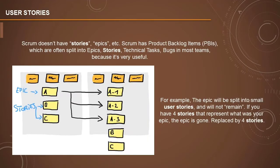The next work item type is user stories. We know about themes and epics; now we look at the next level of breaking down the system, which is user stories. Scrum generally doesn't have stories or epics as per the Scrum Guide, but Scrum has product backlog items, or PBIs, which are often split into epics, stories, technical tasks, and bugs in most teams because it's very useful. From the product backlog items, we derive and put them into epics, stories, and tasks — all of which are work item types of Scrum.